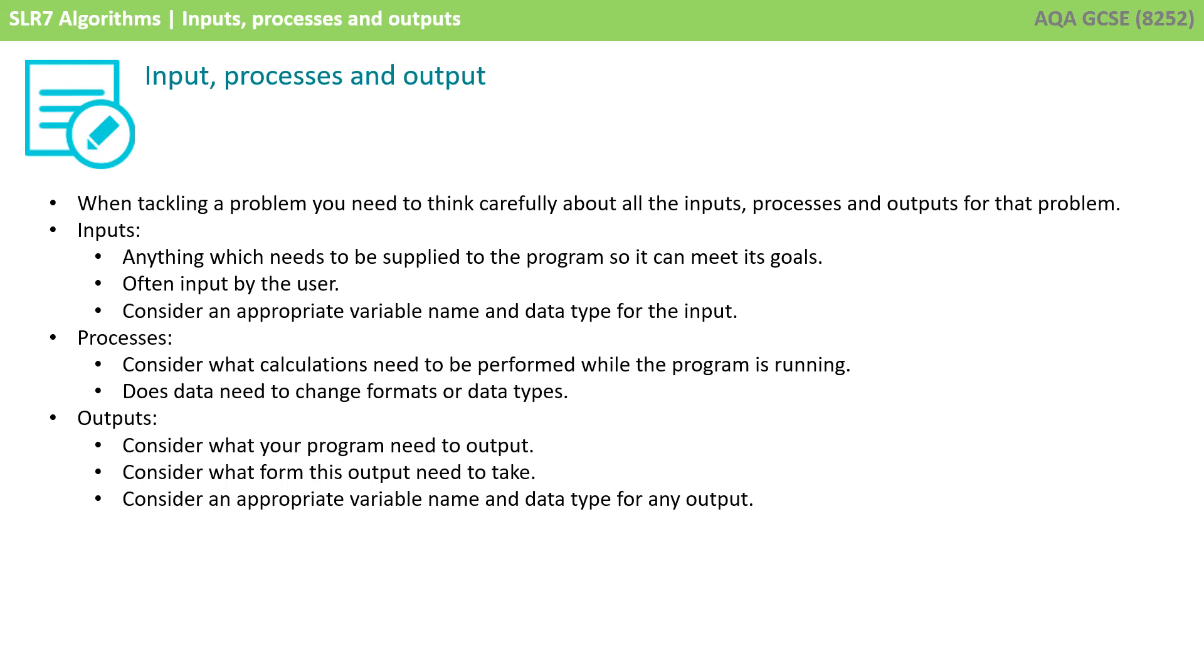Inputs are anything which needs to be supplied to the program so it can meet its goals. These are often input by the user, and you should consider an appropriate variable name and a data type for the input to be stored in. Processes, you should be considering what calculations need to be performed while the program is running. Does the data need to change formats or data types?